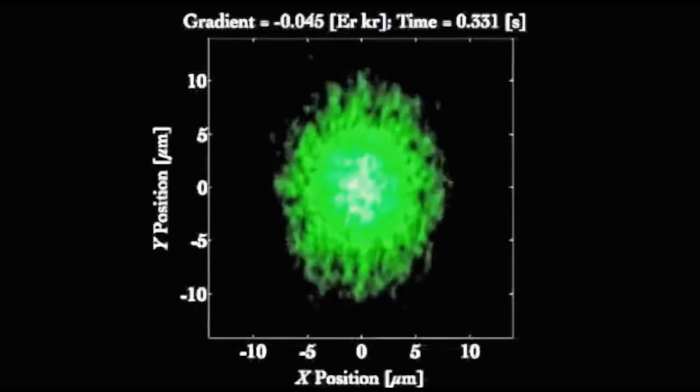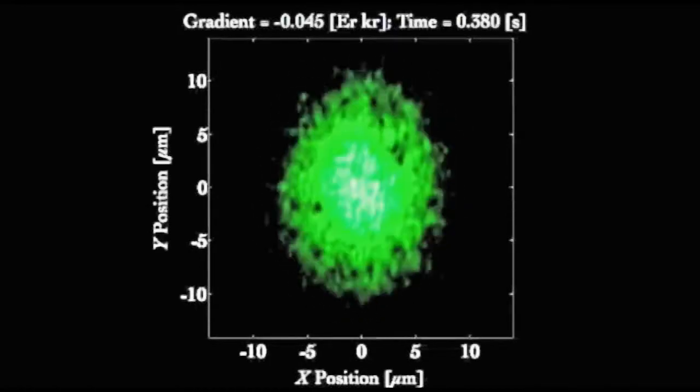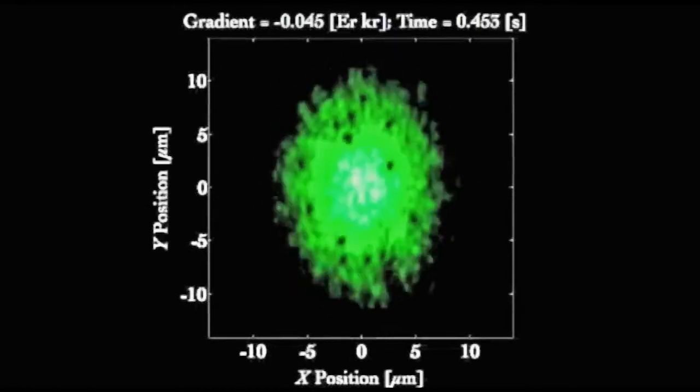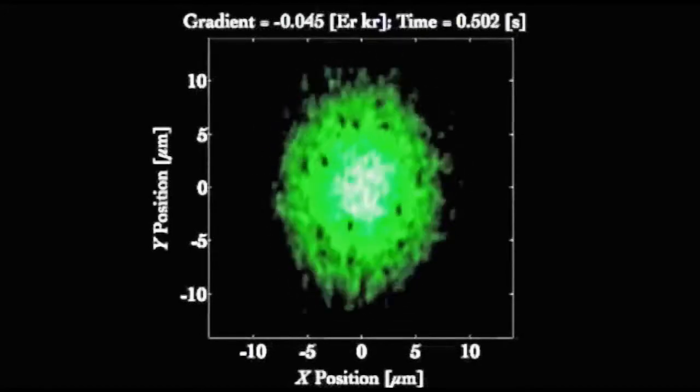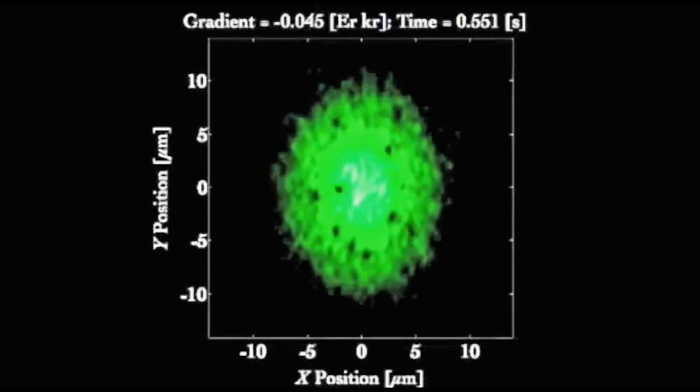In this simulation, the synthetic magnetic field first slowly turns on and then holds constant. Once holding constant, you begin to see vortices circulating about the edge of the system, and then at the top right, the first vortex enters.